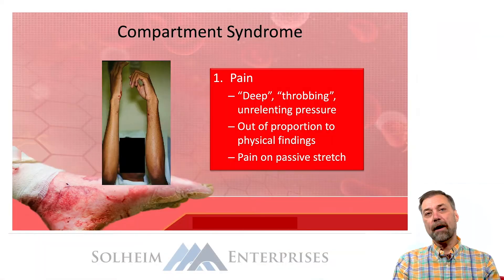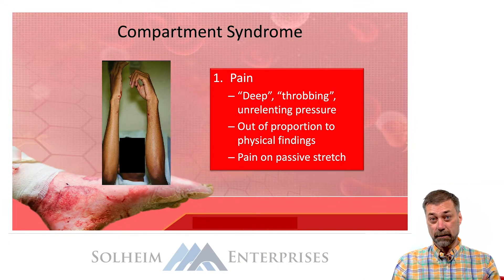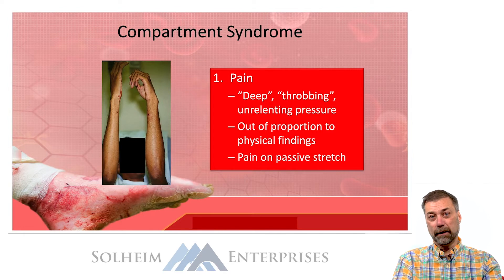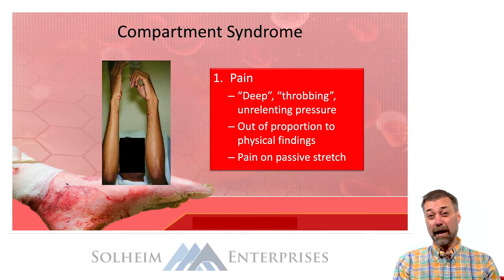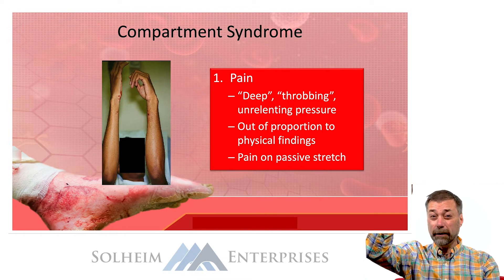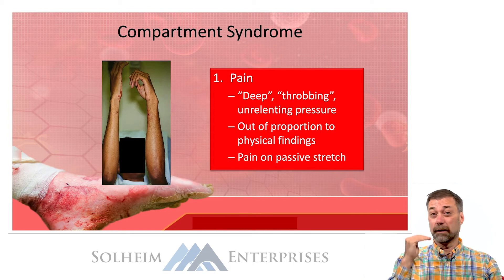Hi, my name is Jeff Solheim with Solheim Enterprises and welcome to our Trauma Certified Registered Nurse or TCRN exam review course. The five P's of orthopedic assessment can be used to identify compartment syndrome. The five P's actually occur in order, and I've listed them in your manual in the right order. I'm going to present them in the order that they tend to occur — from the first P early in compartment syndrome to the last P late in compartment syndrome.